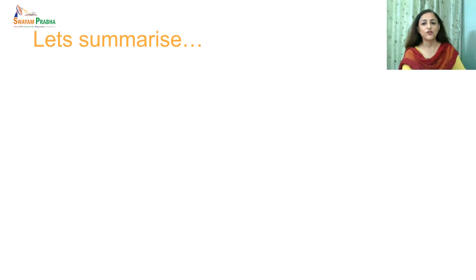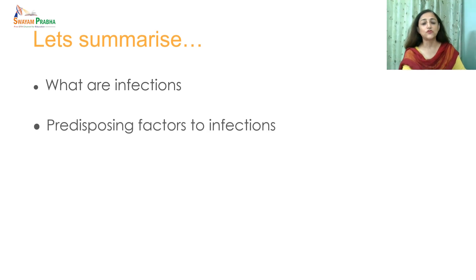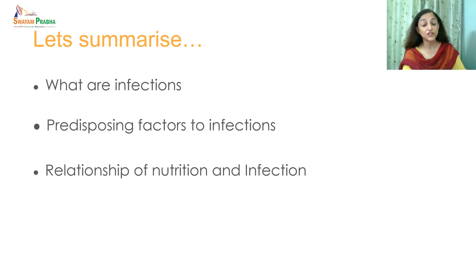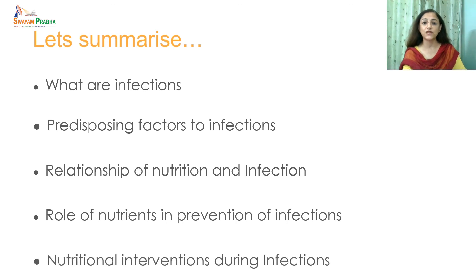To summarize, we studied that when a pathogen gains entry into the body in sufficient numbers or multiplies and causes injury at a particular place, we call it infection. We studied the predisposing factors to infection, the synergistic relationship of malnutrition, immunity and infection, and how a vicious circle of malnutrition and infection is formed. We studied how infections impact nutritional status, the role of nutrients in prevention of infections, and how to plan nutrition care during infection. Thank you.